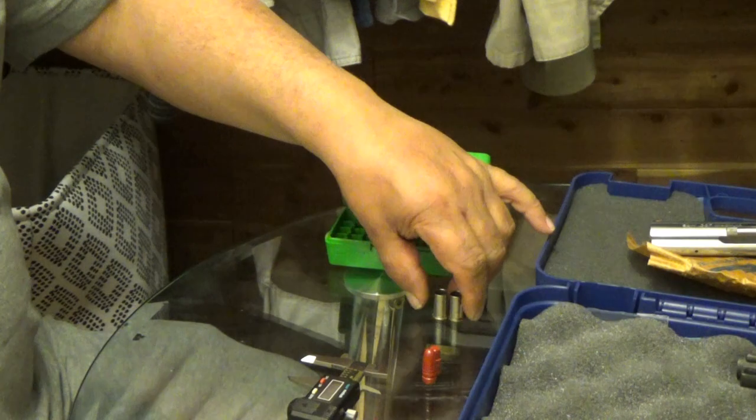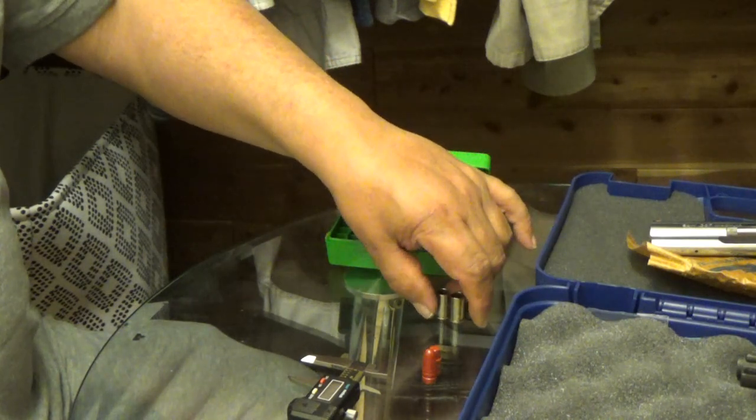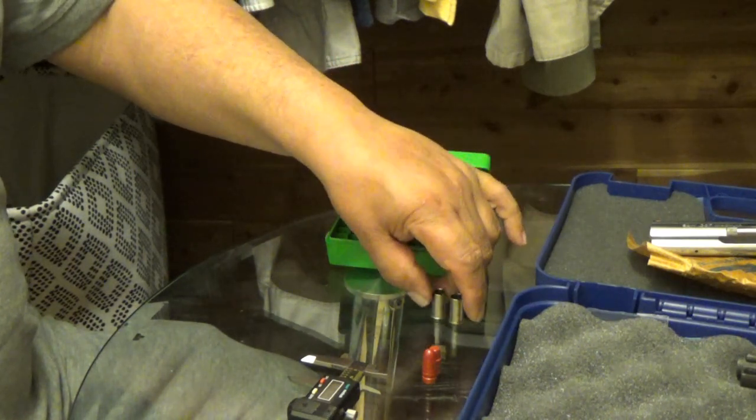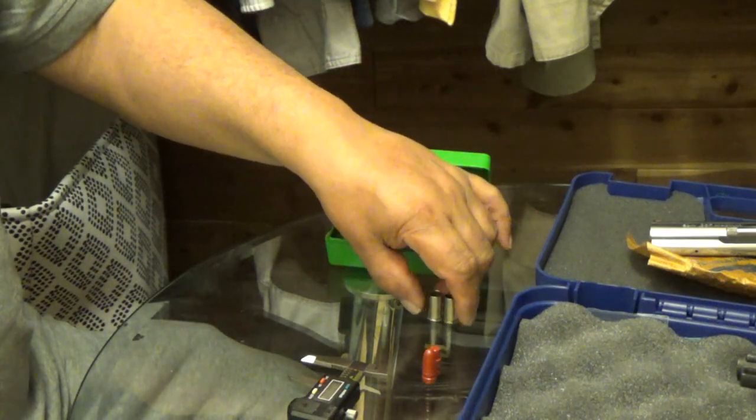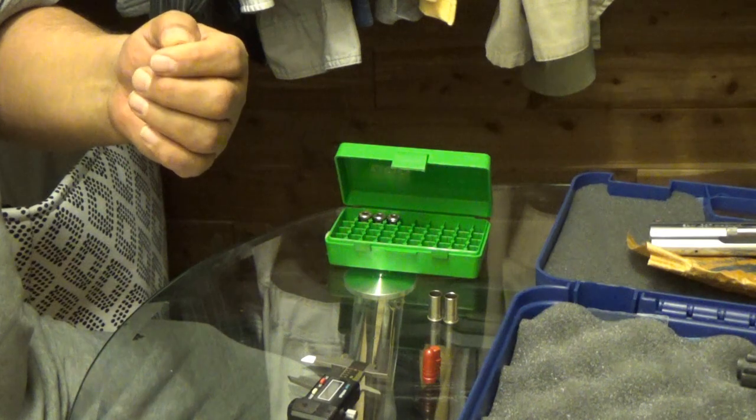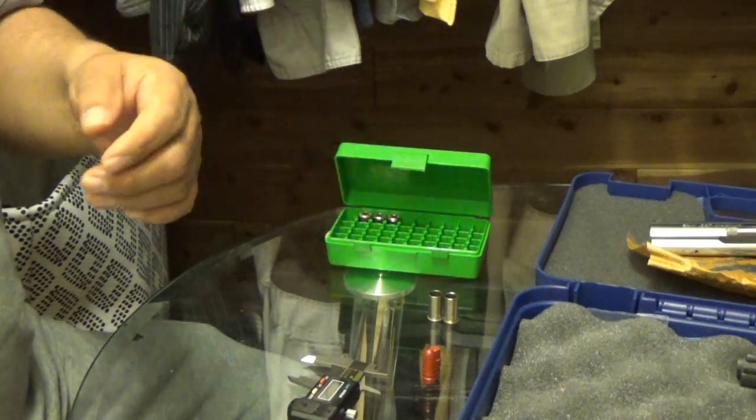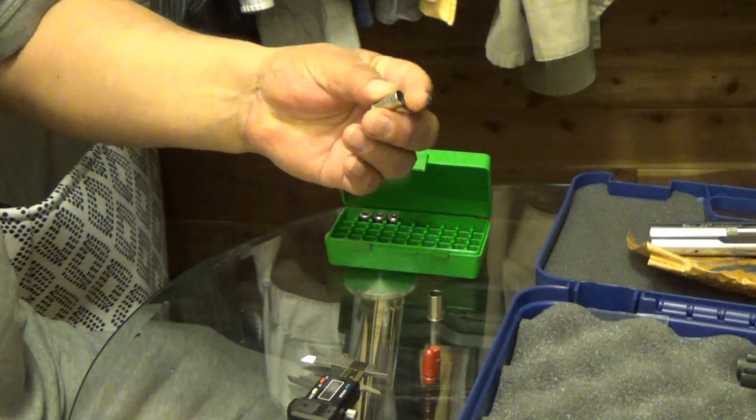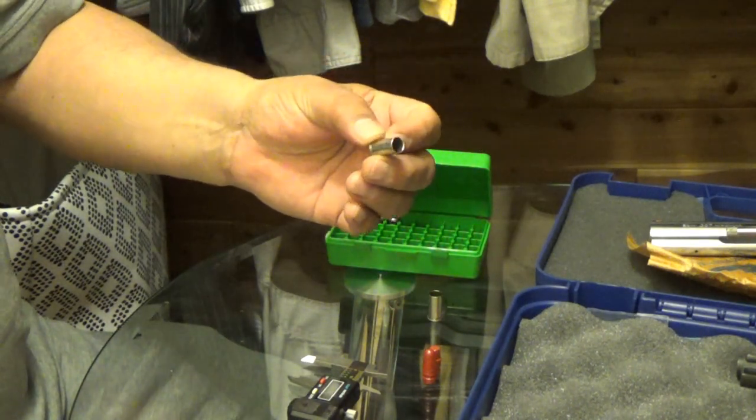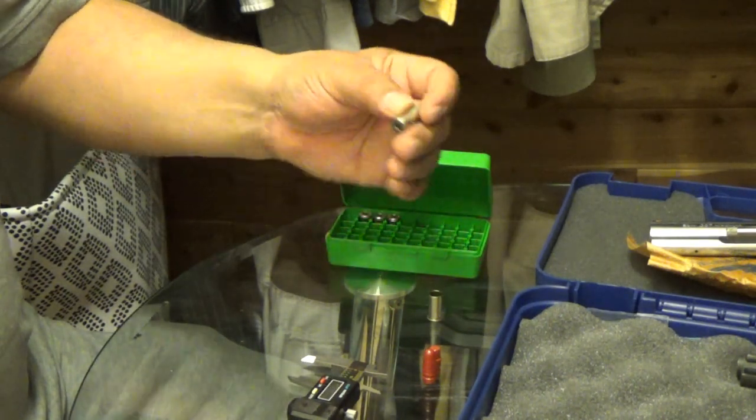They loaded it with a 200 grain bullet during the turn of the century because police departments wanted something a little bit heavier that would stop somebody a little bit faster. So they made a 38-200 version, which was the Super Police basically.